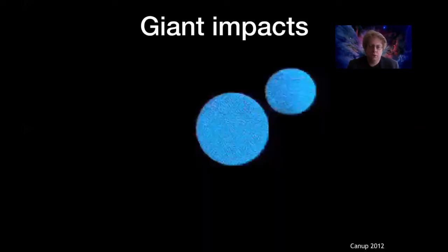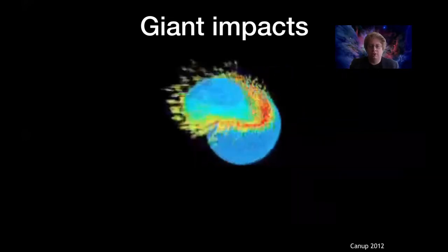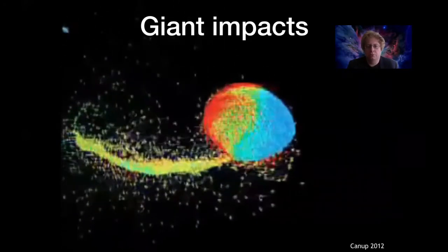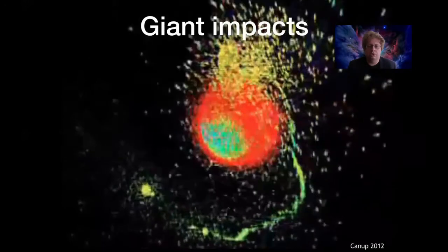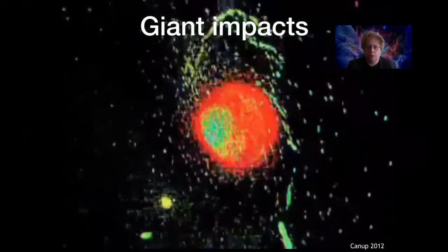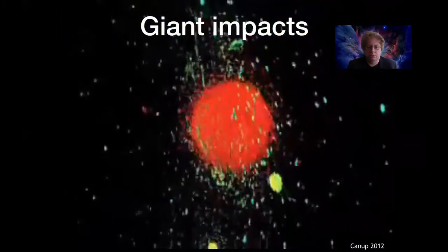So where do moons come from, and what can that tell us about whether they would be good environments for life? One possibility is formation through giant impacts. Consider the collision of two planets — say Earth and a smaller planet the size of Mars. With the right glancing impact, material is blasted off the surface into orbit, and that material can eventually coalesce into a large moon, like the one we have around Earth.